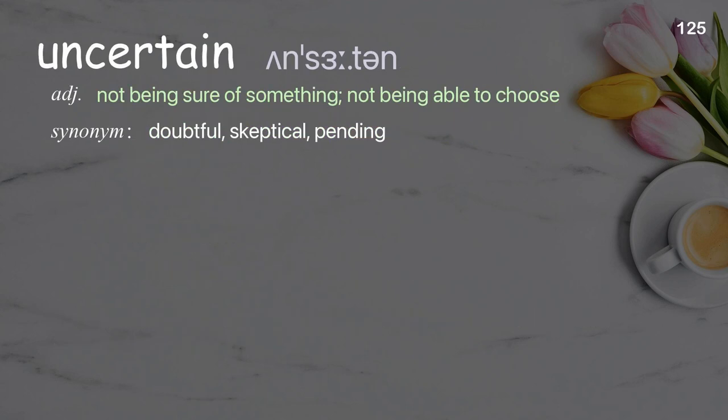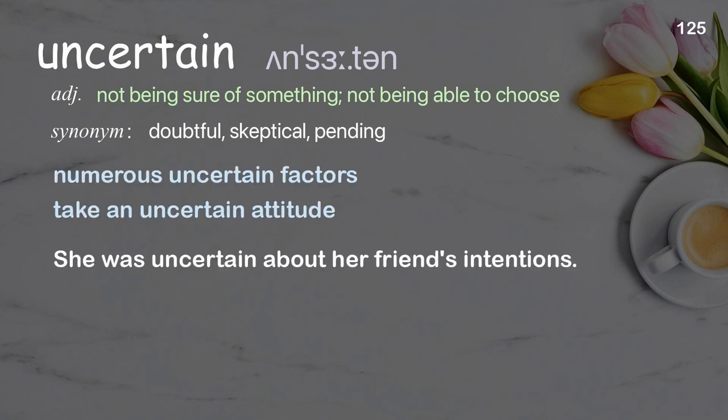Uncertain: not being sure of something; not being able to choose. Examples: numerous uncertain factors, take an uncertain attitude. She was uncertain about her friend's intentions.